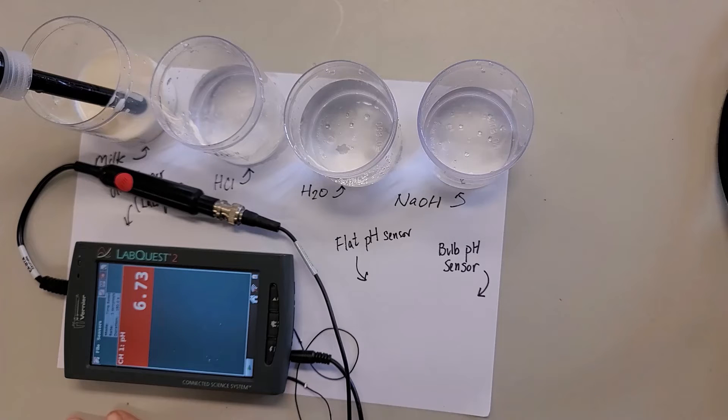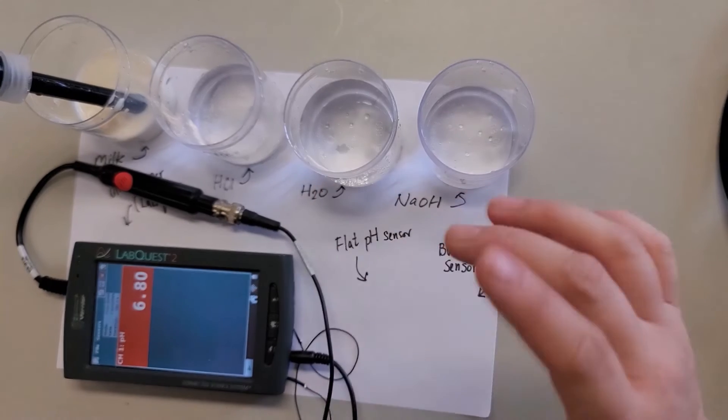So for milk, we expect it to be slightly alkaline. Let's wait for a bit to stabilize. So that's how we use the flat pH sensor. And then moving on to the next part.